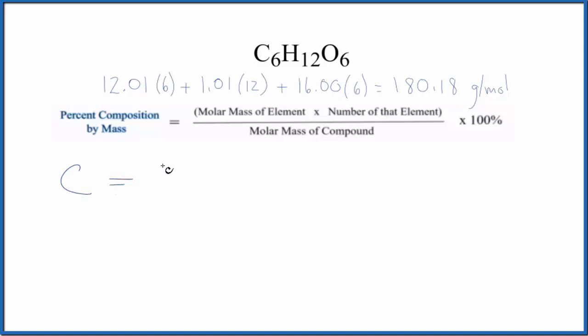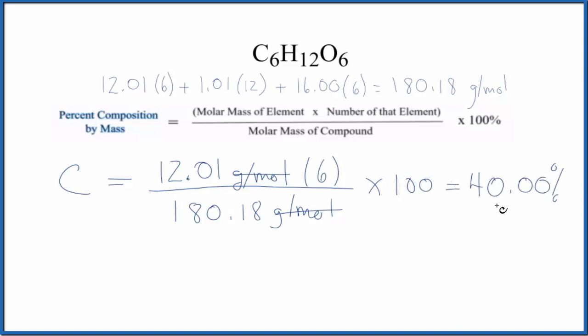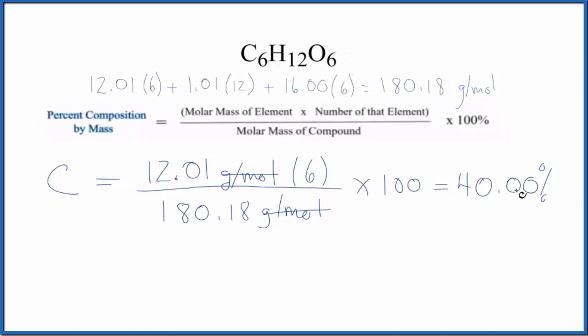For the carbon, we have 12.01, that's the atomic mass for the carbon from the periodic table, units are grams per mole, and then we're going to multiply that by 6, since we have 6 here, that's the number of the element. So when we multiply this by 6, we'll then divide the whole thing by the mass of the compound, the 180.18. We multiply it by 100, and you'll note we have grams per mole on top and bottom, and we end up getting 40.00%. So if you had glucose here, and you looked at the entire mass, 40% of the mass, that would be the carbon atoms.